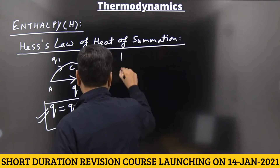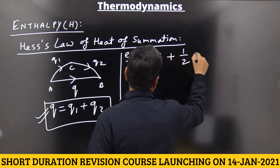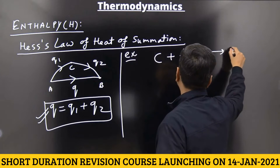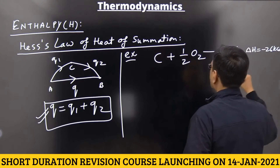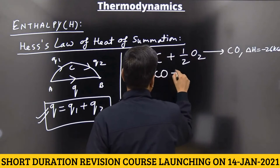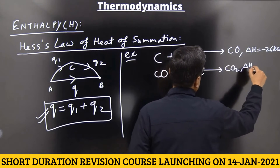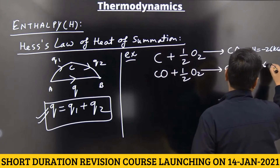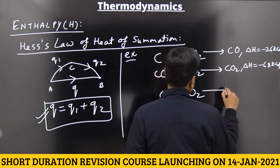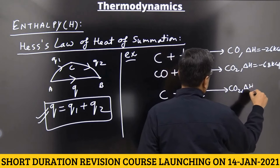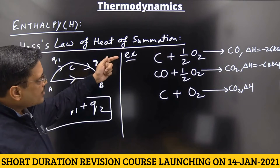See one example: C plus half O₂ gives CO, Delta H is minus 26 kilocalorie. And CO plus half O₂ is equal to CO₂, Delta H is minus 68 kilocalorie. And C plus O₂ is equal to CO₂ — what is the value of Delta H?